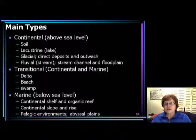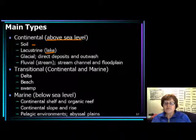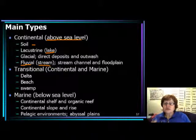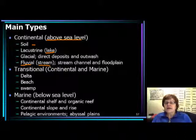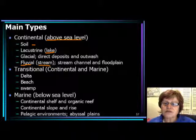Here is the list. First we start with the continental environment, which is always above sea level. We have the soil environment — it's important to realize paleosols, which I'll discuss in a moment. The lake environment is also called lacustrine. You have the glacial environment, and fluvial, which includes all streams. The depositional environments you'll need to know are: soil, lacustrine, glacial, fluvial — which includes alluvial fan, braided streams, and meandering streams — and delta, though the delta belongs to the transitional environment.